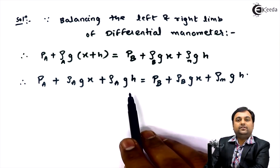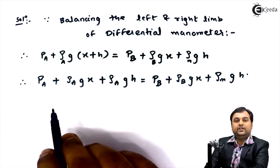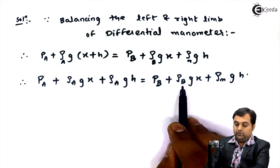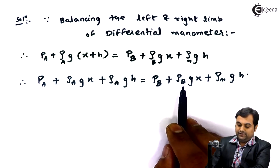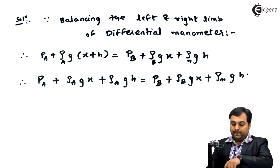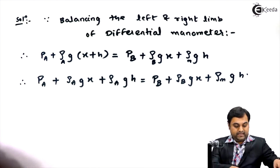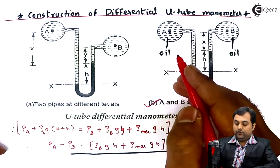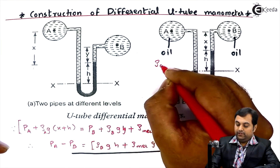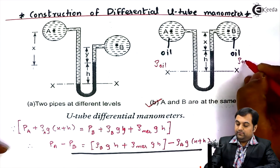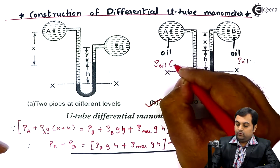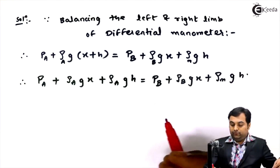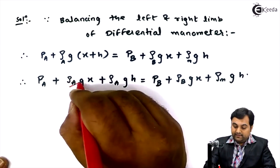Since we are using oil on both sides, this is a very important conclusion: density ρ_a equals ρ_b because both pipelines contain oil with the same density. Therefore, since ρ_a equals ρ_b, the terms ρ_a·g·x and ρ_b·g·x on each side cancel out.